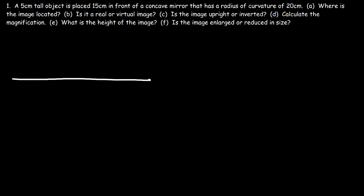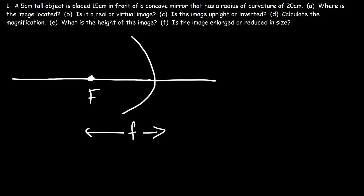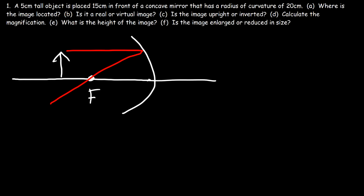Let's draw a ray diagram. This is the shape of a concave mirror, and a convex mirror looks like this. This point here is the focal point. The distance between the mirror and the focal point is known as the focal length. Now let's place the object beyond the focal point. DO represents the distance of the object from the mirror. This here is the principal axis, and we're going to draw a ray from the object to the mirror and then towards the focal point.